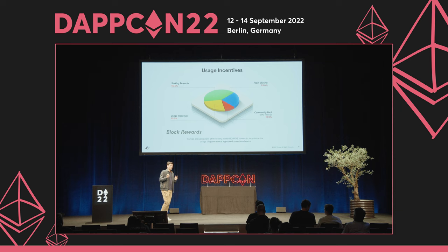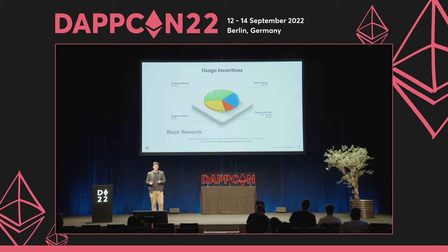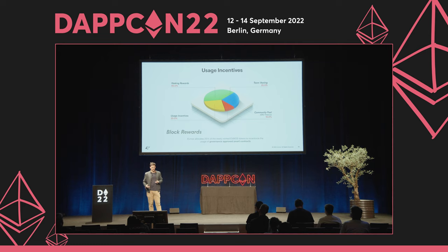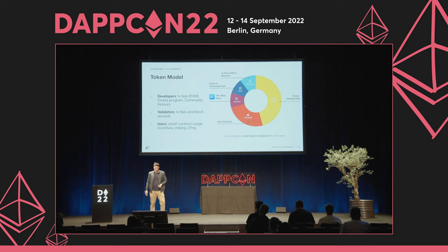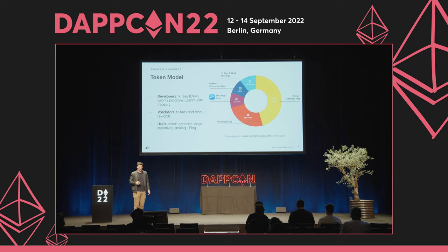So for example, if you deploy your application to Evmos and create a governance proposal that has been approved, your users will be earning Evmos tokens from these usage incentives, and by paying fees for each transaction, you'll get direct revenue from every interaction users have with the protocol. Evmos is creating economic alignment: developers are aligned through transaction fees as developer revenue, validators are aligned through transaction fees and block rewards, and users are aligned through smart contract incentives, staking, and liquidity provisioning.